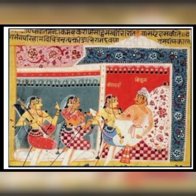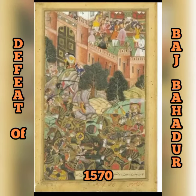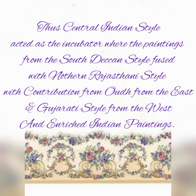Males wore Pathan-style dress with Angarkha, and females wore full skirt, choli, and the patta. The Mughals attacked and annexed Mandu in 1561; Baj Bahadur fled and surrendered in 1570. Painters dispersed and sought shelter in Mewar, from where a full-fledged Rajasthani style painting originated around 1571. Thus, Central Indian style acted as the incubator where the Deccani style from the South fused with the Northern Rajasthani style, with contributions from Odh in the East and Gujarati style from the West, enriching Indian paintings.